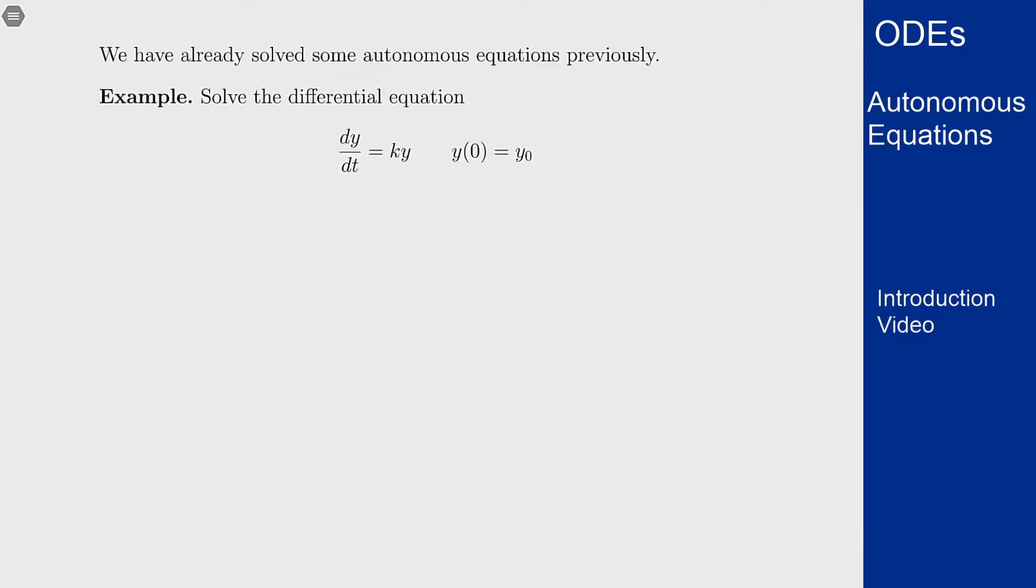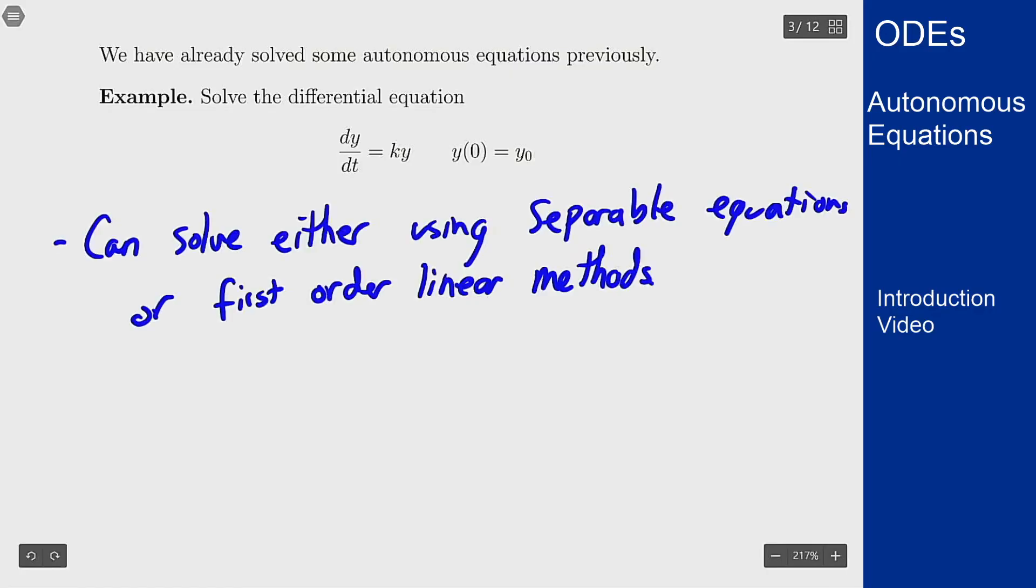So we've seen some of these equations already previously. Right here is one key example, dy dt is ky with y of 0 being some number y0. We could solve this either by a separable equation method or by first order linear. And in this case we will get to our solution, y of t is y0 times e to the kt,